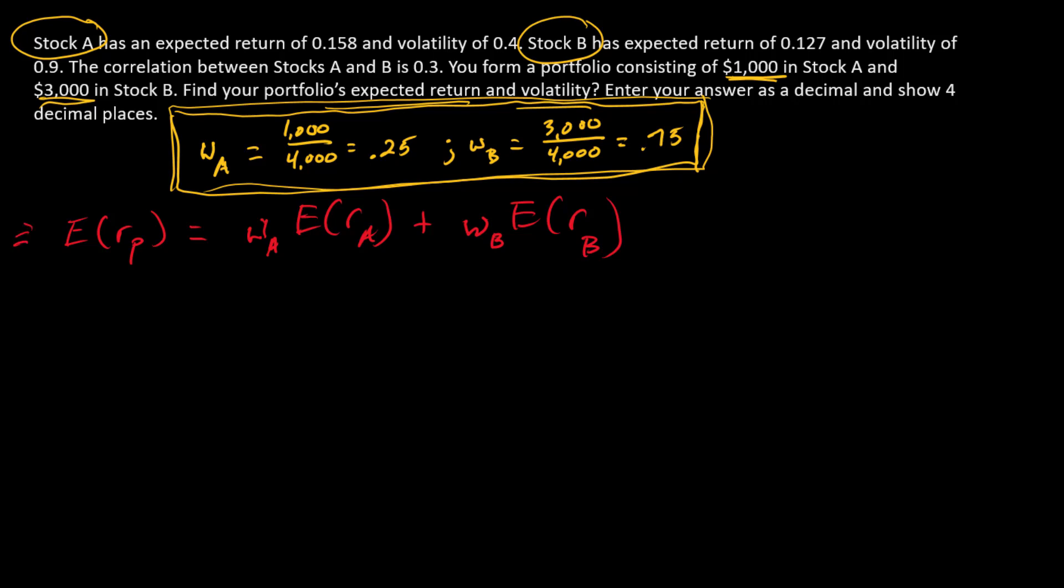So let's go back to the expected return now. We've got this formula, and we have actually all these quantities given, so now we can just insert them. So this is the weight in A, that's 0.25, times the expected return of A. There's the expected return of A, 0.158, so we'll put that here.